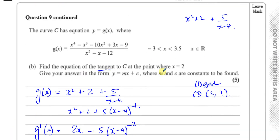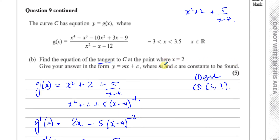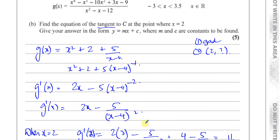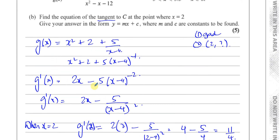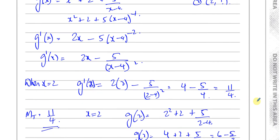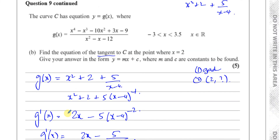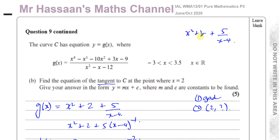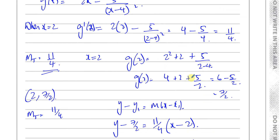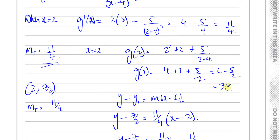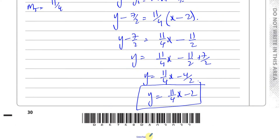That's part B of the question. Find the equation of the tangent to the curve at the point where x equals 2. So we found the gradient of the curve by substituting 2 into the gradient function — first by differentiating, then putting x equals 2 into that. We found the coordinates by putting x equals 2 into the original equation, ending up with 7 over 2, and used that point and gradient to find the equation of the line.